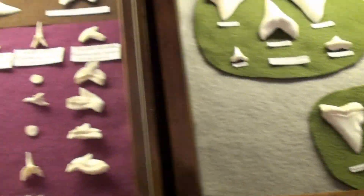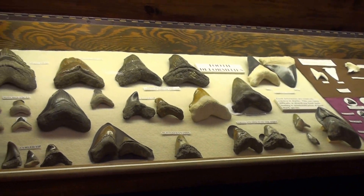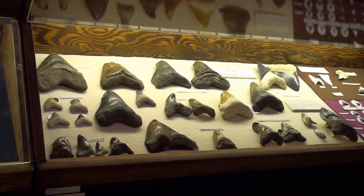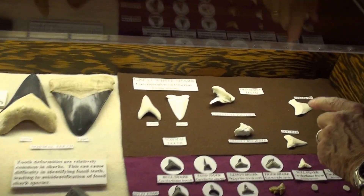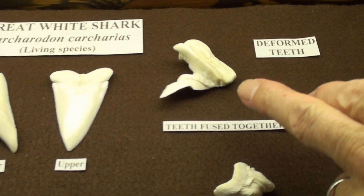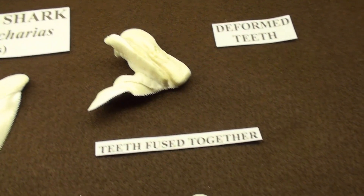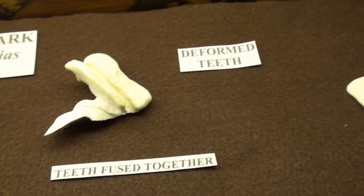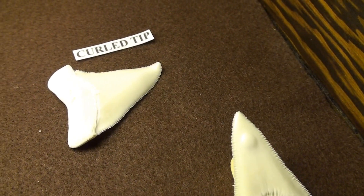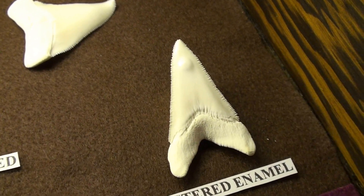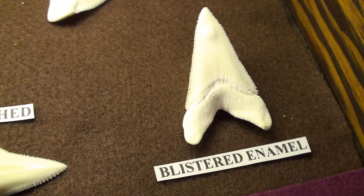Moving over to some of these other deformities — there are white sharks in here too. These are recents. These are two teeth that grew together, one in back of the other one. And then there's a curled tip — you can see a little bit of a hook to the tip of the tooth. Here's one that has a kind of a blister on the enamel, and I don't know what would cause it.